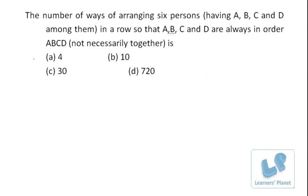Let's take this question: The number of ways of arranging six people having A, B, C and D among them in a row so that A, B, C and D are always in order ABCD, not necessarily together. That means A has to be before B, B has to be before C, and C has to be before D.